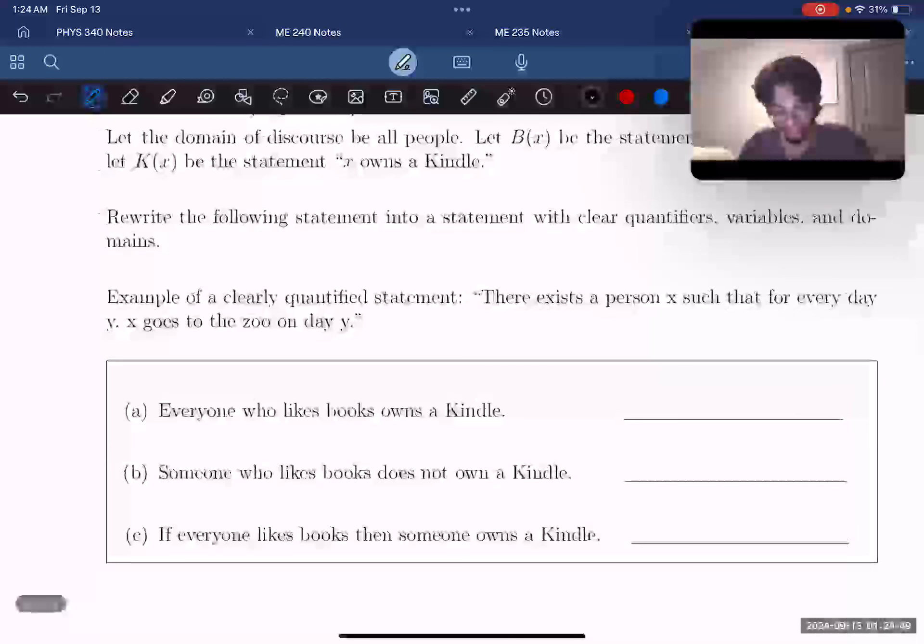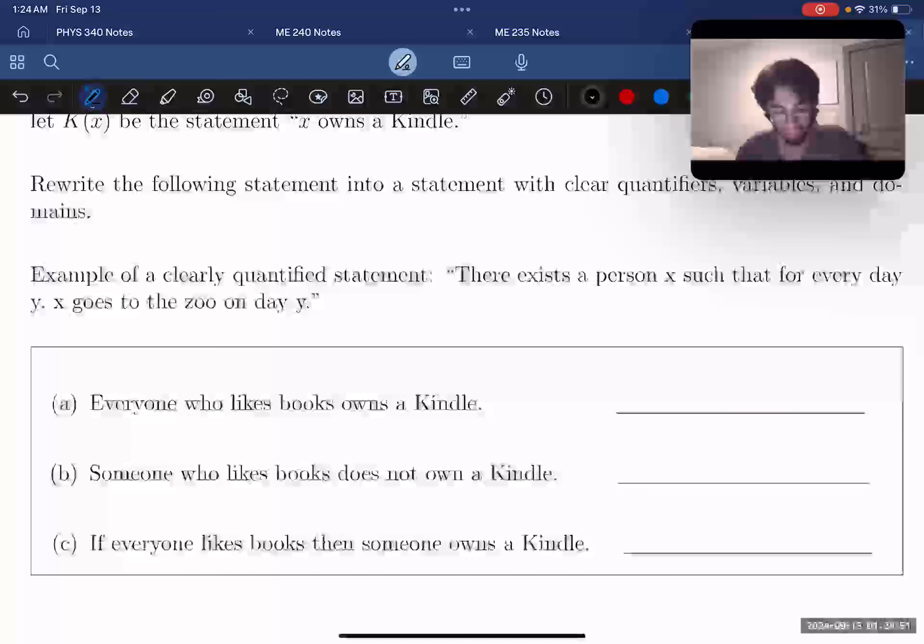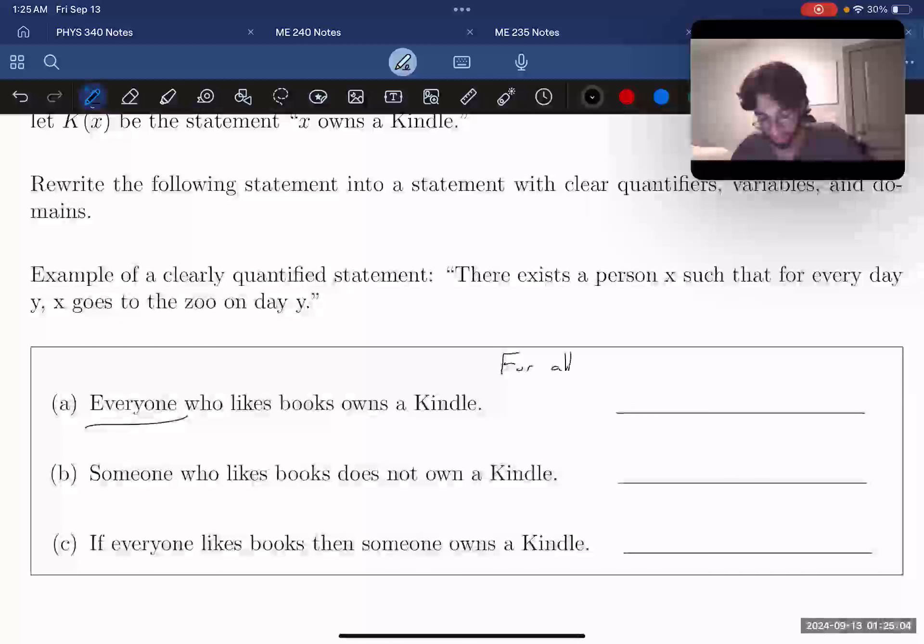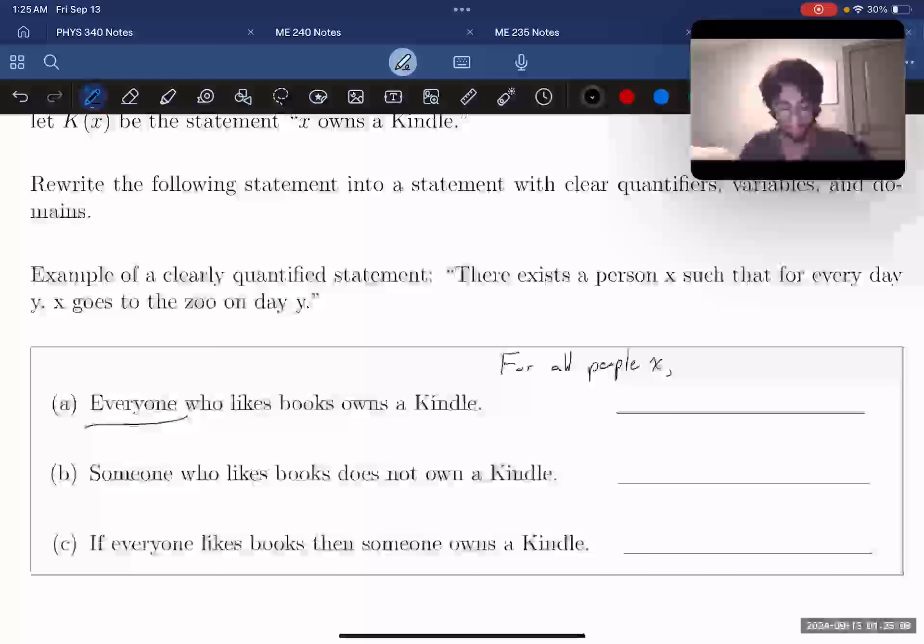So let's look at Part A. Part A says that everyone who likes books owns a Kindle. So what do the parts of this statement mean? The everyone means that we're talking about all people X. So we can start by saying for all people X, and then these people X, if they like books, if X likes books...